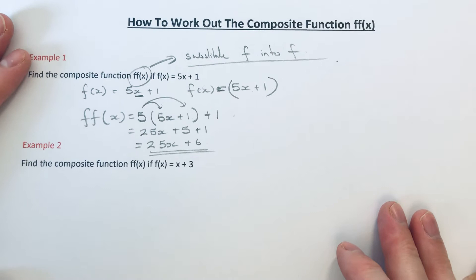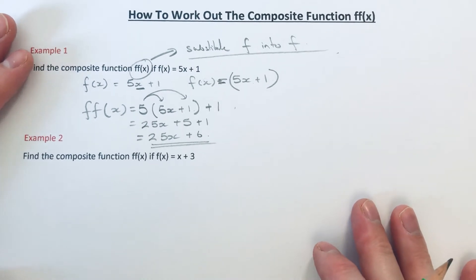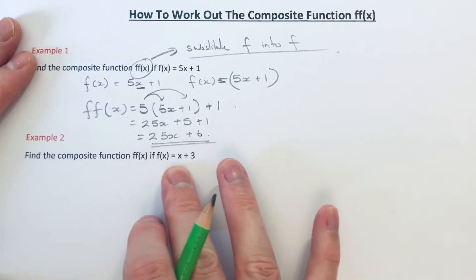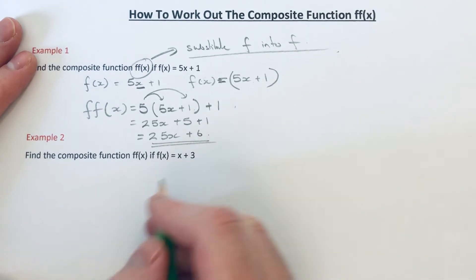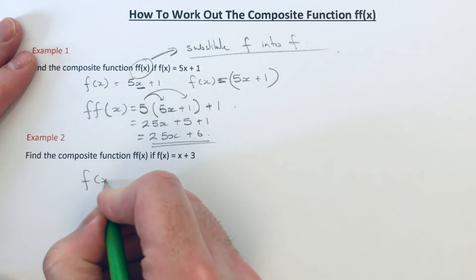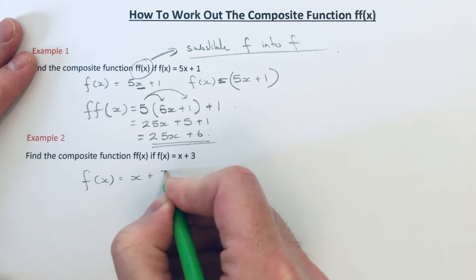So let's have a look at the second example then. So again we need the composite function ff of x if f of x equals x plus 3. So the best way to do it is copy the function f down two times.